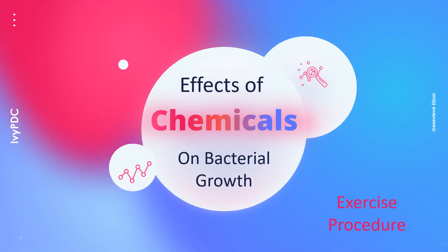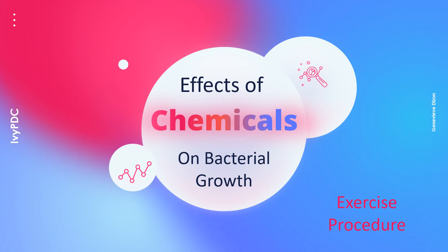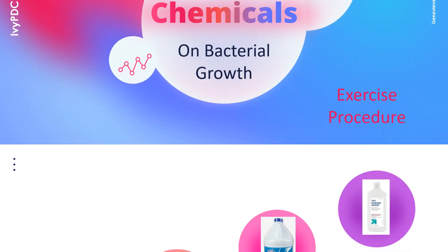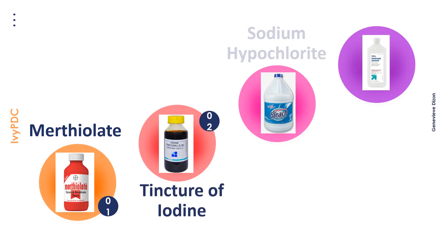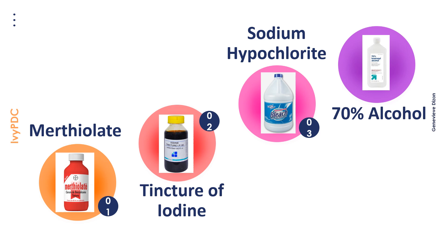Hello everyone. This video will discuss the procedure for the exercise about the effects of chemicals on bacterial growth. The chemicals we will be using for this experiment are merthiolate, tincture of iodine, sodium hypochlorite, and 70% alcohol.